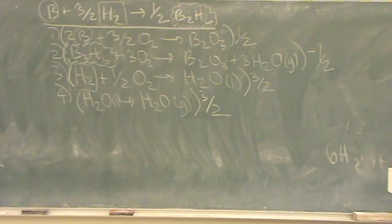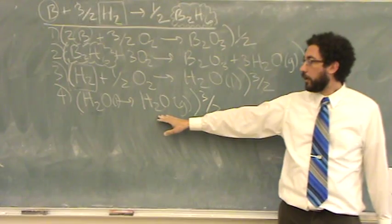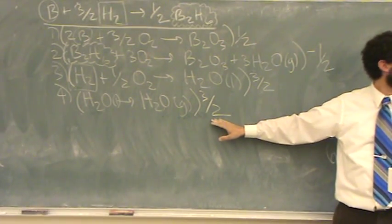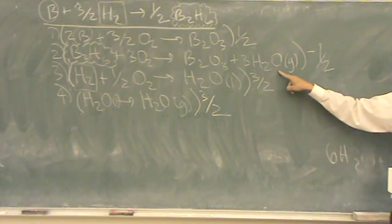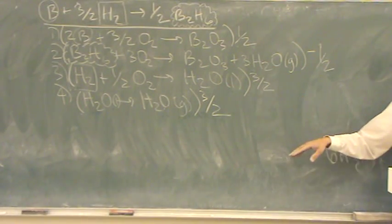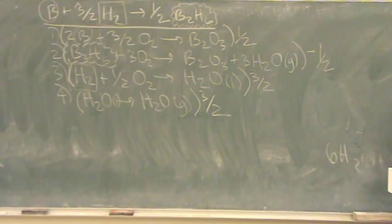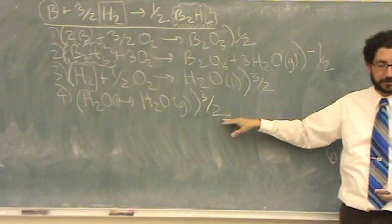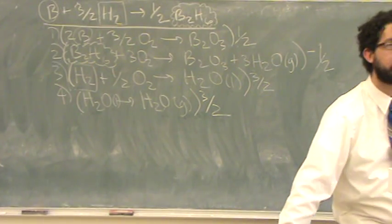And if you're nervous, which you should be on an exam, you should see if the other ones cancel. So for example water gas state, there's three halves in the products, and up here there's minus three halves in the products, so that'll cancel. So you'll see everything's going to cancel, and there's my multipliers: one half, minus one half, three halves, three halves. And we're done. Any questions on this one?